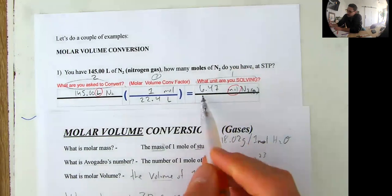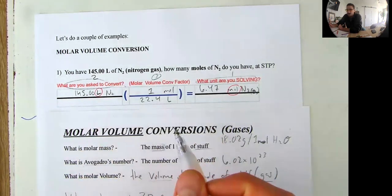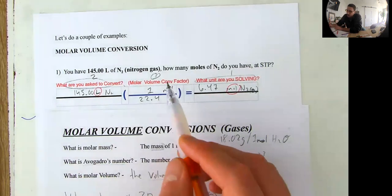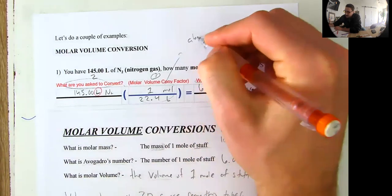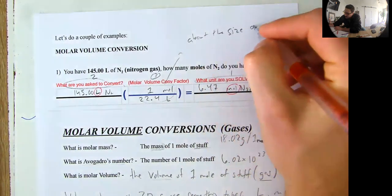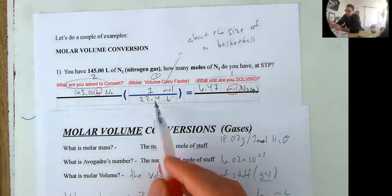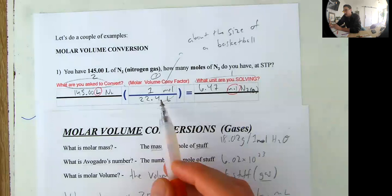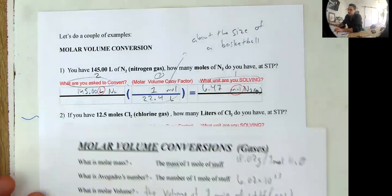Okay. So this many moles of nitrogen gas occupies 145 liters of space, of three-dimensional space. Use your visualization skills and try to imagine that. One good way to visualize molar volume is it's about the size of a basketball. About the size of a basketball. Okay. So thinking about like, you know, those liters of Gatorade, if you could fill up a basketball with Gatorade, you could probably fit 22.4 Gatorades inside of a basketball. It's a weird image, but I think it helps get the point across. Okay. Let's do one more example.